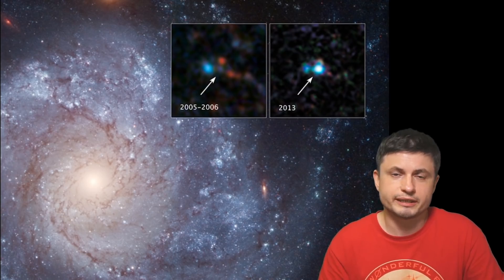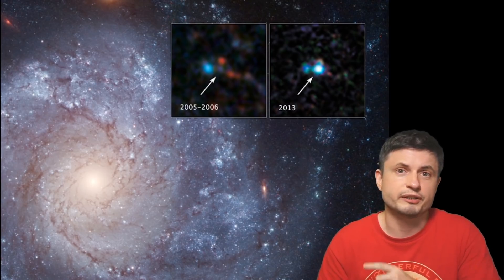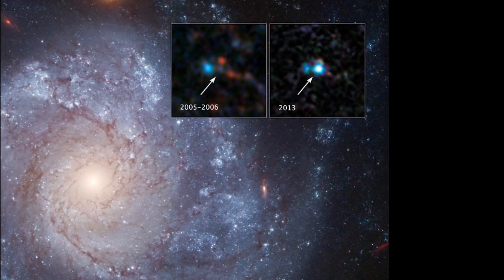Interestingly, it's really only in the last few years that we've started discovering these unusual objects, with one of the first ones being this one right here, located in a galaxy known as NGC 1309.